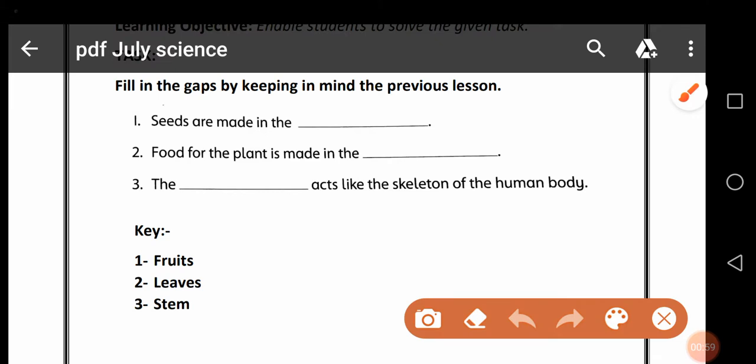Number 1: Seeds are made in the blank. Seeds kahan bante hain? I told you that seeds are made in the plant's flower, in its flower.